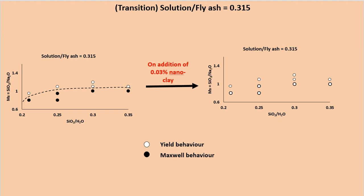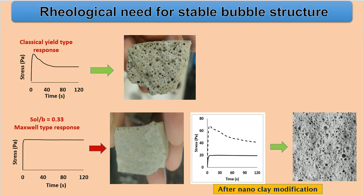But why do we need to study this? When trying to create a cellular structure within the alkali activated fly ash paste, the paste exhibiting only the yield type of response gave a stable bubble structure, whereas in case of Maxwell type of response there was no bubble structure within the matrix and all the bubbles collapsed. After adding the nanoclay and observing the change in response from Maxwell to yield type, and for the same paste after adding aluminum powder, we observed a bubble structure within the system. The conclusion is that yield stress is necessary for a stable bubble structure to be created in the alkali activated fly ash system.